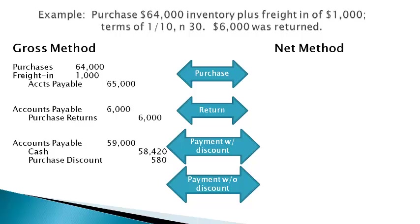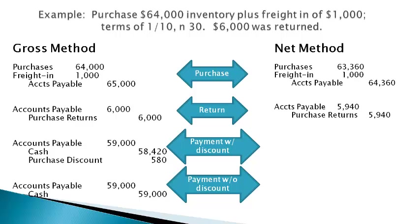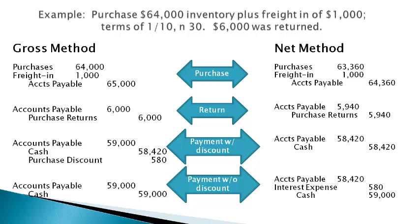The purchase discount is only on the inventory purchase, and freight in is always paid at 100%. If the discount is not taken, the purchase plus freight less the return is all paid at 100%. Under the gross method, the purchases and freight accounts are always recorded at the full amount, and the difference in the cash paid and the accounts payable is the purchase discount. Under the net method, purchases are recorded net of the 1% discount, or at 99%. Freight is always recorded at 100%, and the return is also recorded net of the 1% discount. If the discount is taken, the balance in accounts payable — the net amount — is paid and there is no difference. When the discount is not taken, more than the accounts payable at net is paid, and the difference is recorded to interest expense as a financing cost.